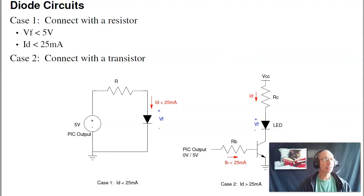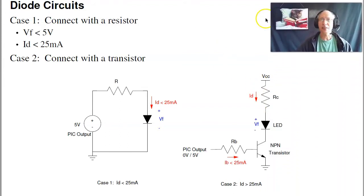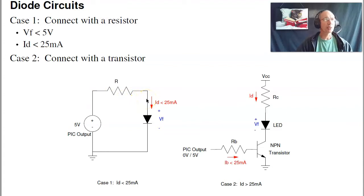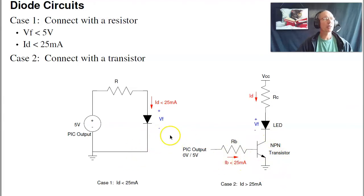The circuit to connect a PIC to an LED is one of two options. If you need less than 5 volts and less than 25 milliamps, just connect the LED directly through a resistor. For example, for a red LED with a 1.9-volt drop, you can't put 5 volts directly across it — the resistor saves the PIC and also sets the current. If you need more than 5 volts or more than 25 milliamps, use a transistor. We'll look at both in the following lecture.